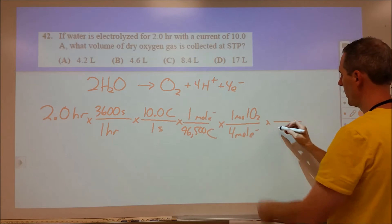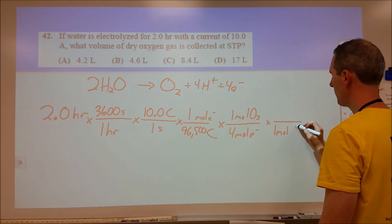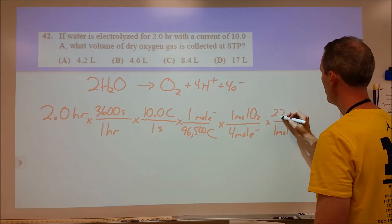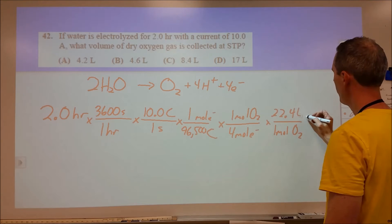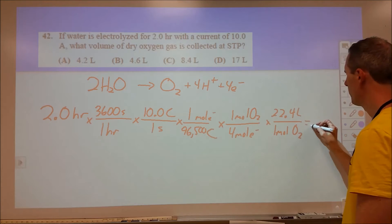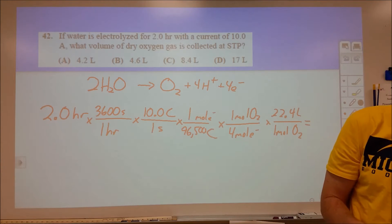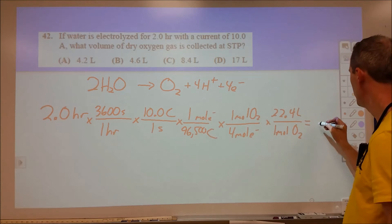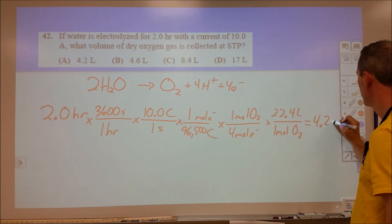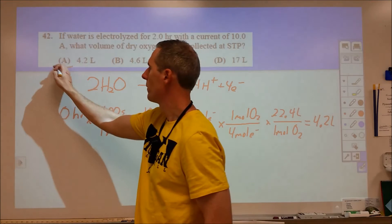In our last step, we're going to go from moles to liters at standard conditions. So 22.4, 22.7 liters. When you multiply that all out, you get 4.2 liters of gas.